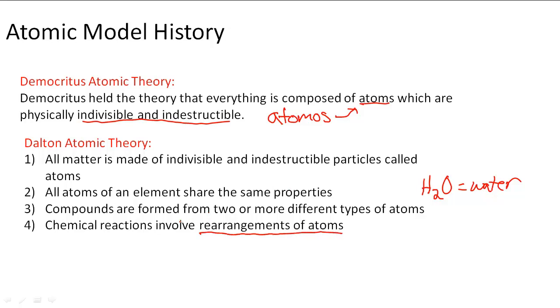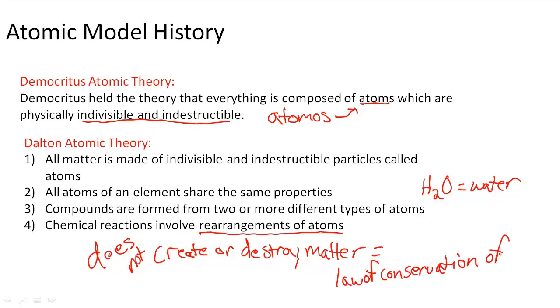Just the rearrangement, so this is a very important part of the theory to remember that holds true, is that chemical reactions involve just the rearranging, separating, combining of atoms. It does not create or destroy matter. This is called the law of conservation of matter, and it's very important to remember that chemical reactions just involve the rearrangement of atoms. So that is Dalton's atomic theory.